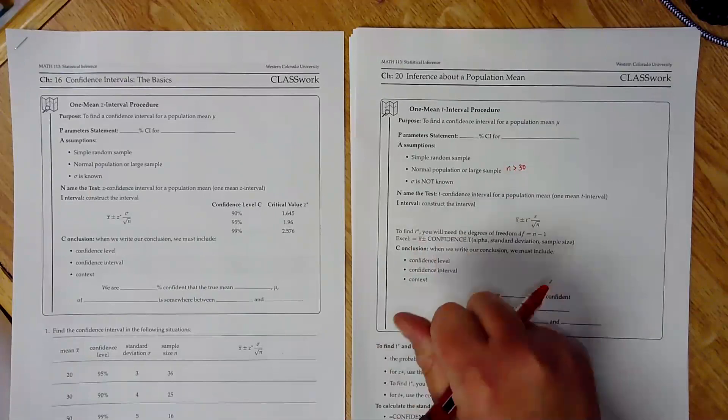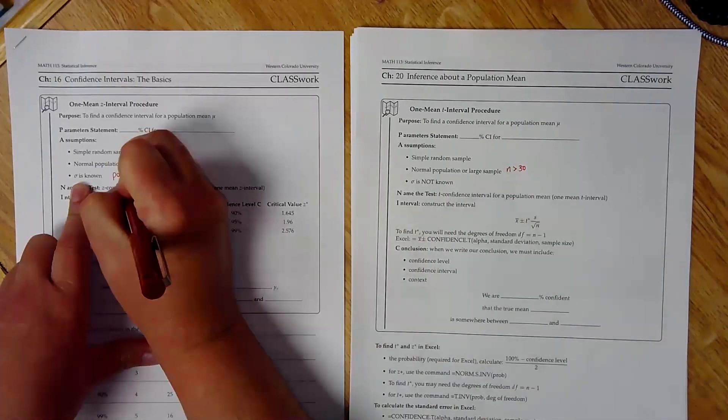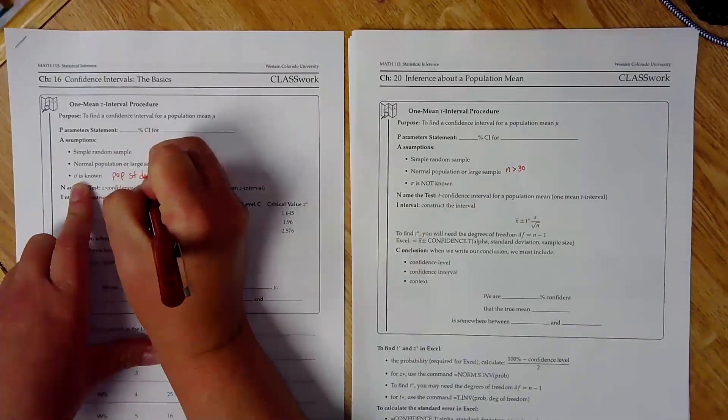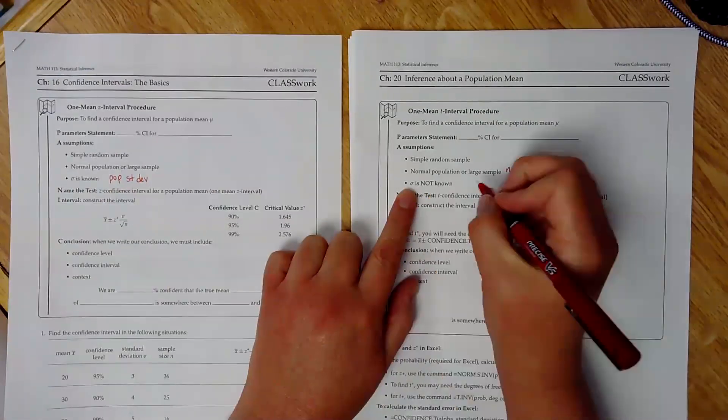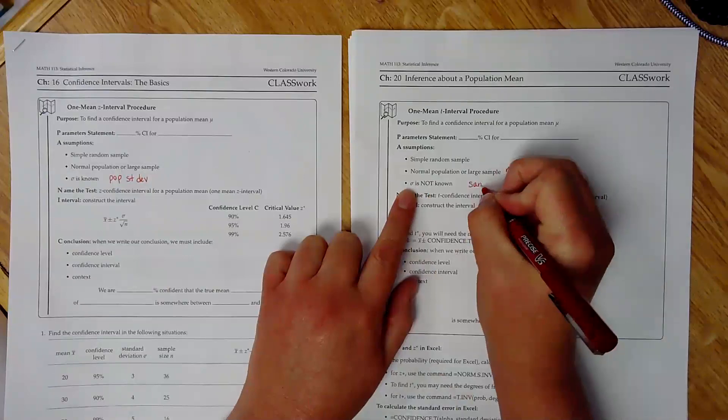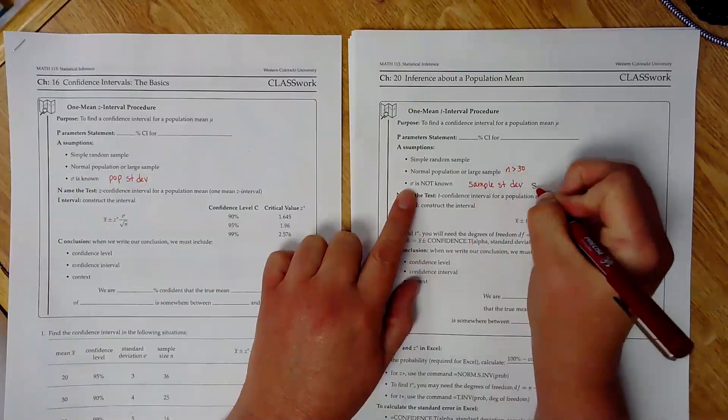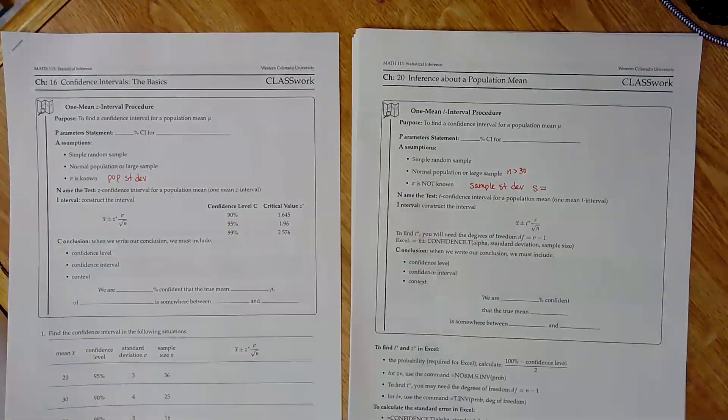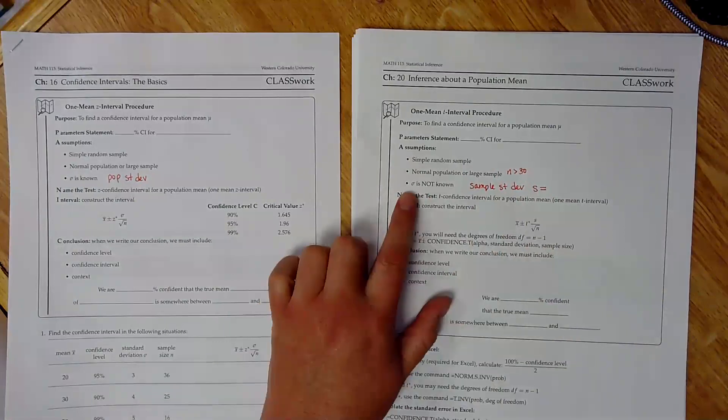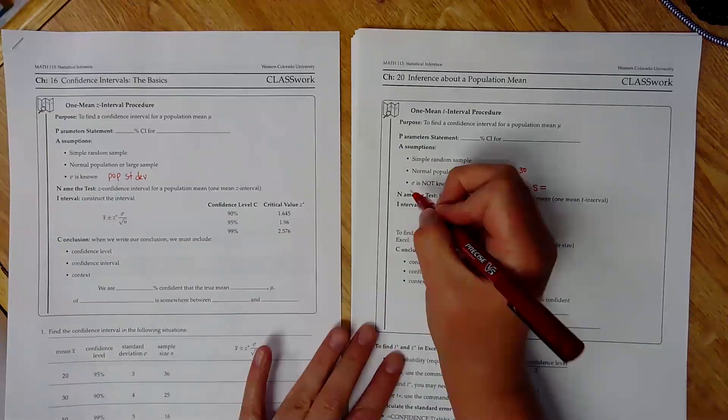Here's where our assumptions and conditions change, though. On our one-mean-z interval, sigma is known. So this is our population standard deviation. On a t interval, we don't know the population standard deviation. So what we're going to use is our sample standard deviation. And we use the letter s for that. If you see the letter s, that is your sample standard deviation. Do you see the Greek letter sigma? That's your population standard deviation. So there's one difference right there.